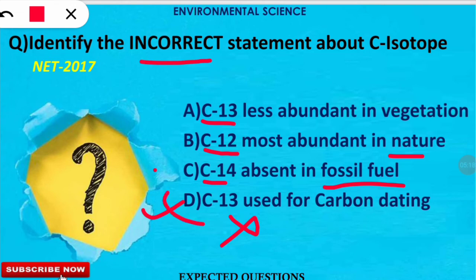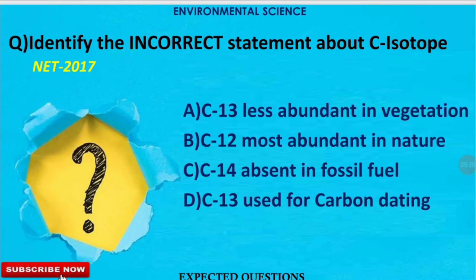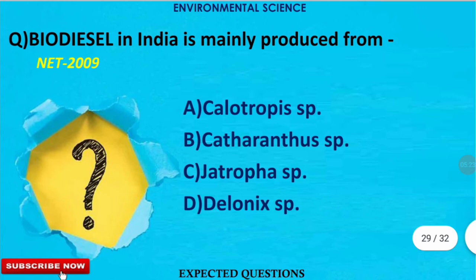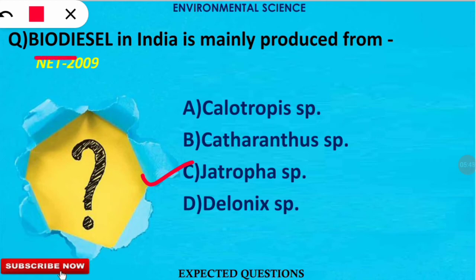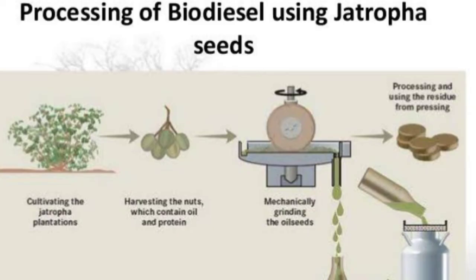The next question is: biodiesel in India is mainly produced from which of the following plant species? The correct option is option C. The Jatropha plant species is used for biodiesel production in India. Seeds from the fruits are collected, crushed, and the biodiesel is produced from them.